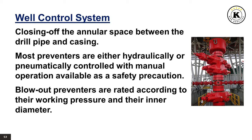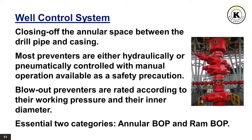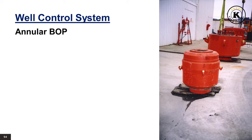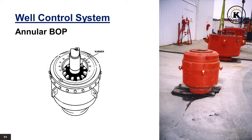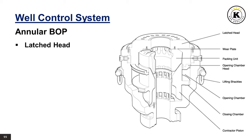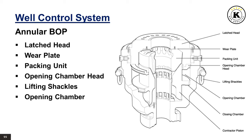There are many BOP design variations, but they fall essentially into two categories: annular preventers and ram preventers. The annular type BOP seals by closing a circular rubber packing element around the drill pipe; most types will also seal the annulus with virtually anything or nothing in the bore. The annular BOP is composed of a latched head, wear plate, packing unit, opening chamber head, lifting shackles, opening chamber, closing chamber, and contractor piston.